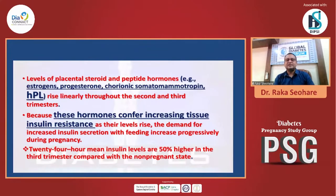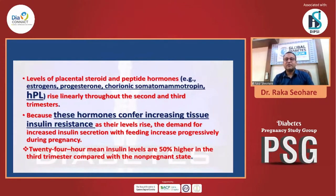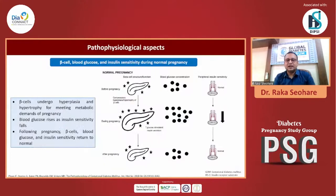The demand for early and increased insulin secretion with feeding increases progressively during pregnancy. Twenty-four-hour mean insulin levels are 50% higher in the third trimester. In spite of higher insulin release from the body, the insulin resistance overweighs this balance, and that's why the patient is in this diabetogenic state.